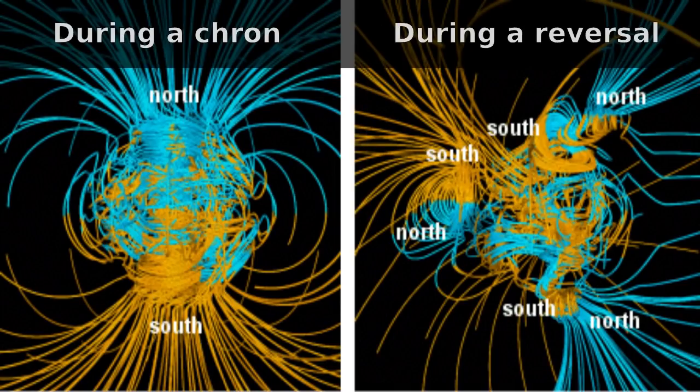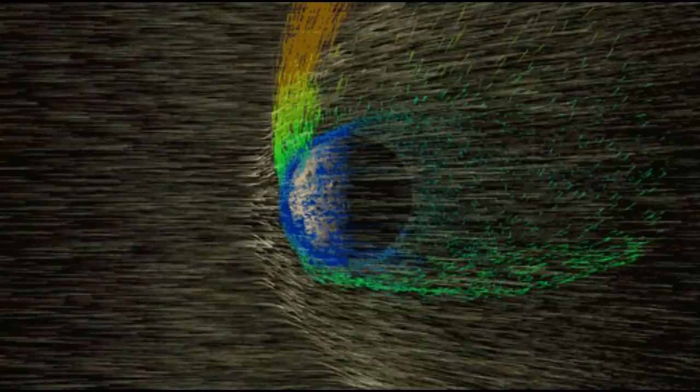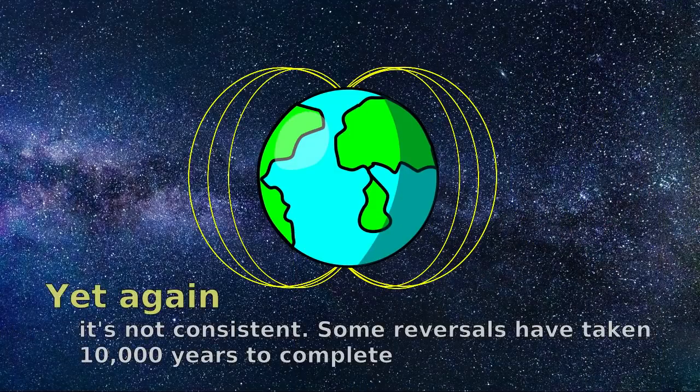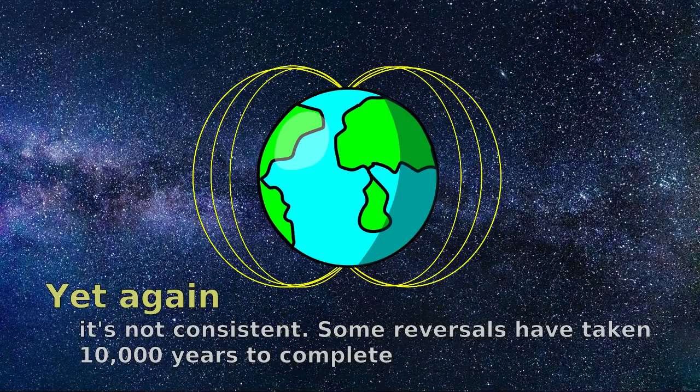A weakened magnetic field during the flip is a bigger concern. Evidence shows that the field strength dropped to 5% of normal during the last quickie flip 40,000 years ago, and that certainly meant more cosmic radiation hacking away at the atmosphere. Historically, most flips have taken at least a thousand years to complete, so that's a pretty long time to be left unprotected.